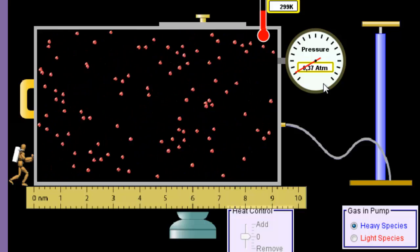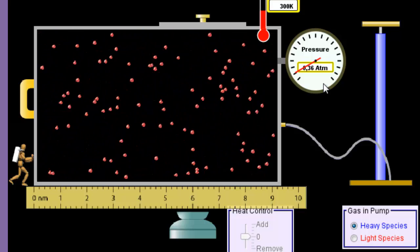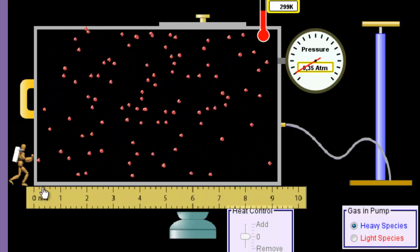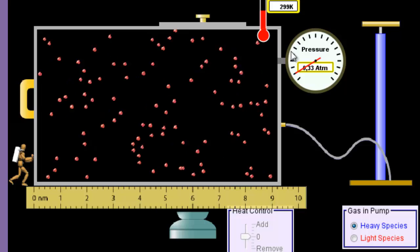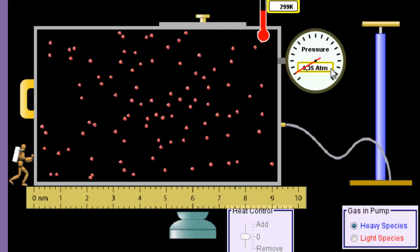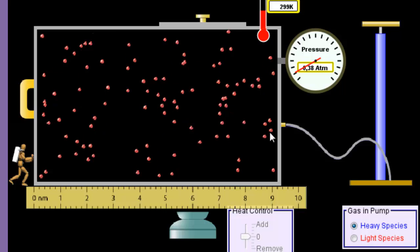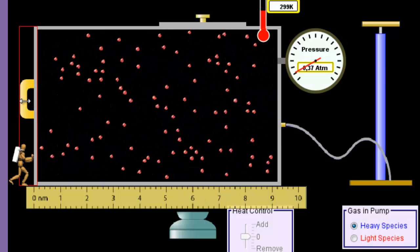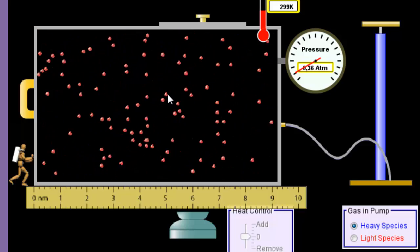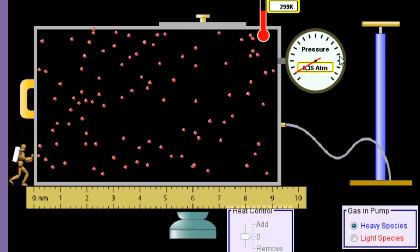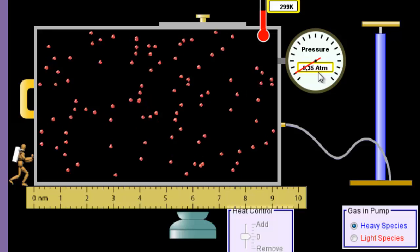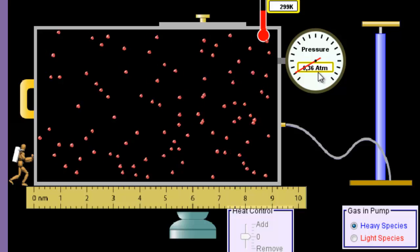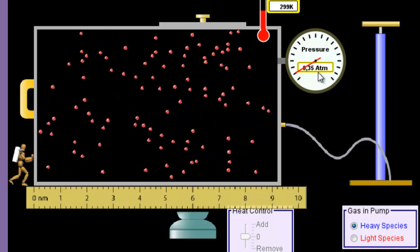Boyle's Law tells us that if temperature stays constant, then this product of length times pressure should stay constant. I take those two values, multiply them, and find a value. Then you could decrease the volume, which will increase the pressure, and use those two new values to see whether the product of the new volume and new pressure comes out to be the same constant as before.